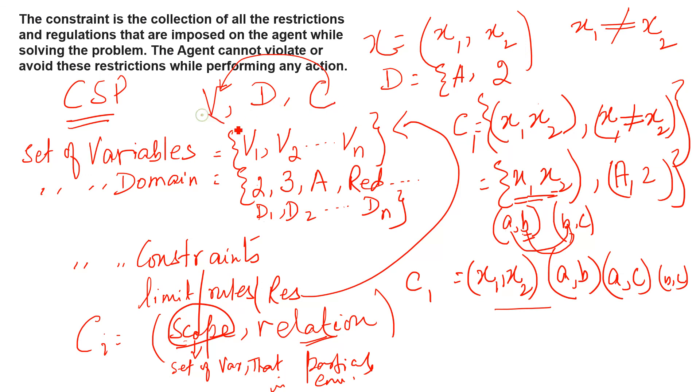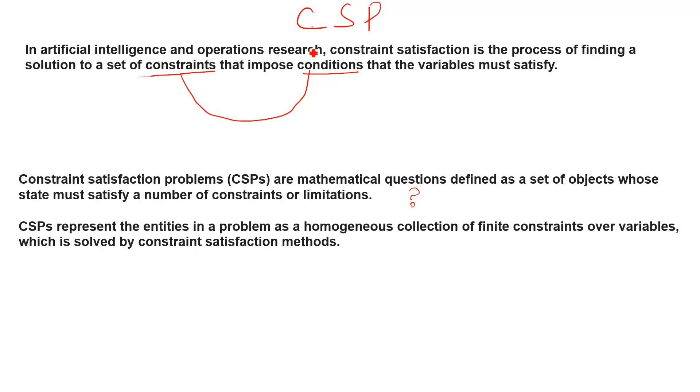And the variable should follow the restrictions which are set in the constraint. Now I will read this. The constraint means limitation or rule is the collection of all the restrictions and regulations that are imposed on the agent while solving the problem. The agent cannot violate or avoid these restrictions while performing any action. Go back to this definition. In artificial intelligence or operation research, constraint satisfaction is the process of finding the solution to a set of constraints that impose conditions that variables must satisfy. Now, you can read this very slowly. It will be clear to you.